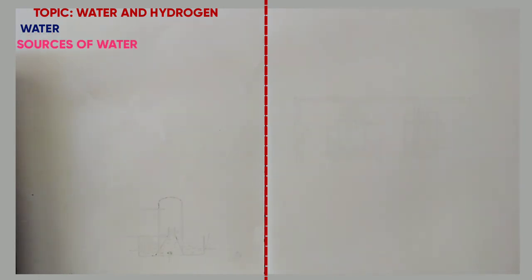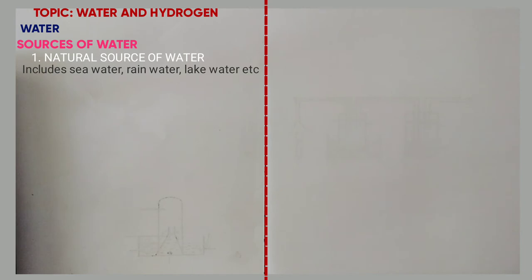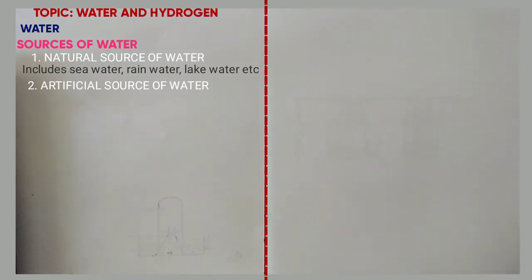Water can be obtained by two ways. We have what they call natural sources of water. Natural sources of water include sea water, rain water, and lake water. Artificial source of water is obtained by burning organic matter, for example, hydrocarbons.